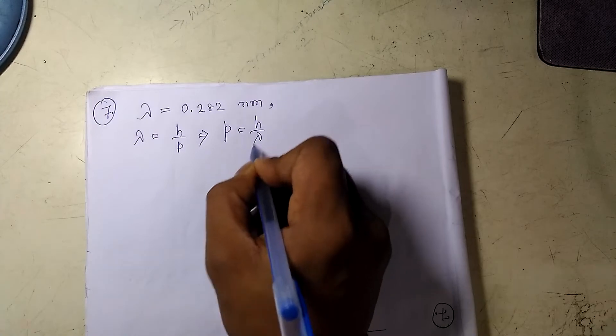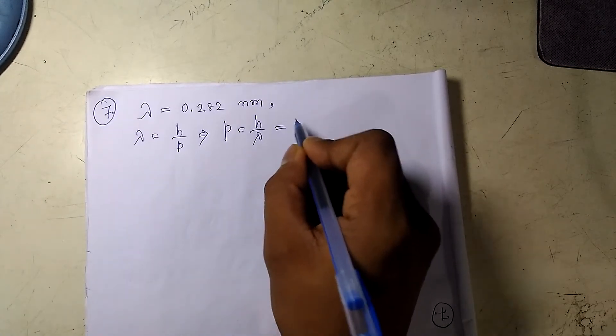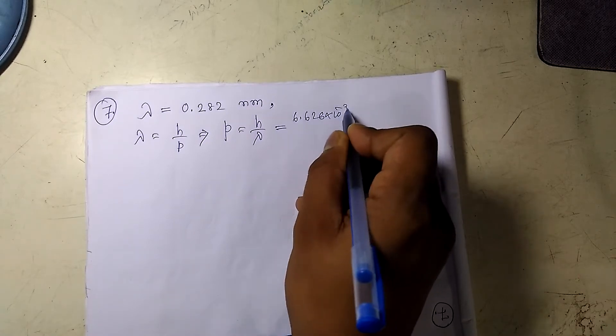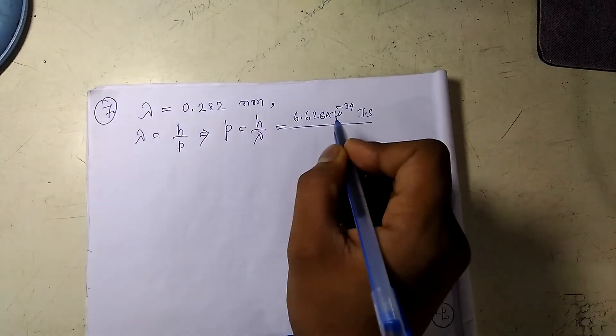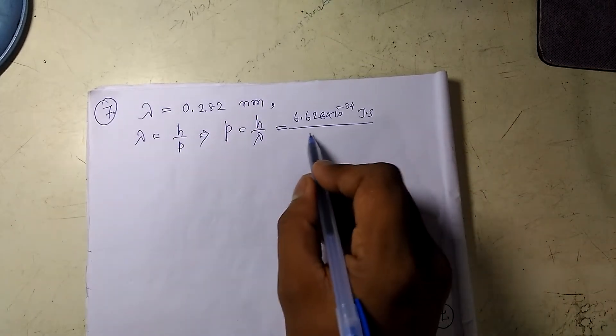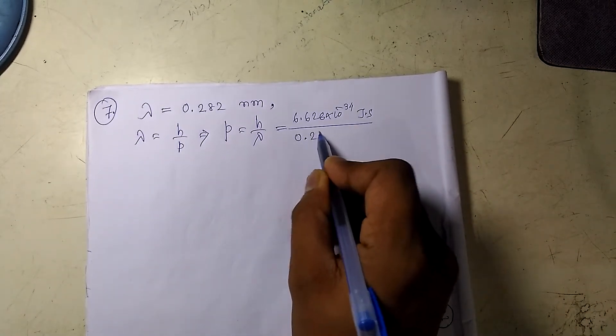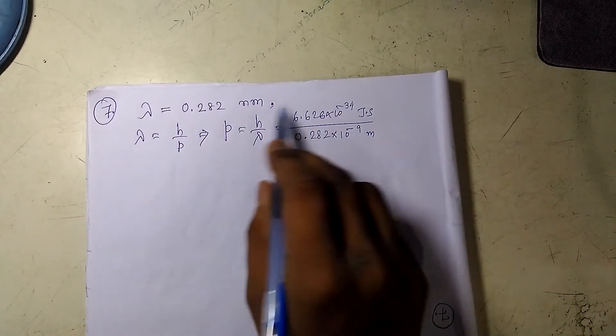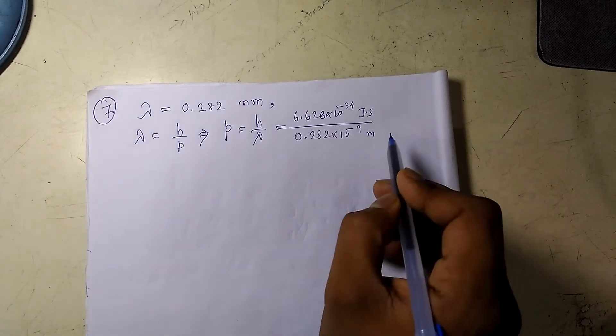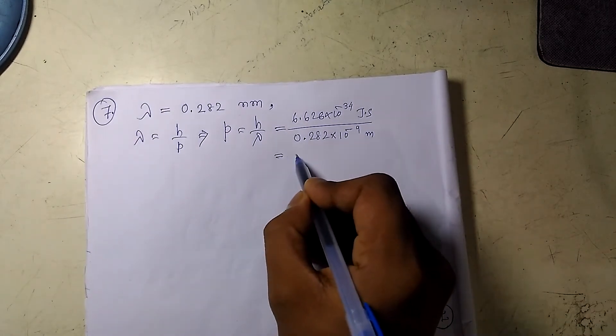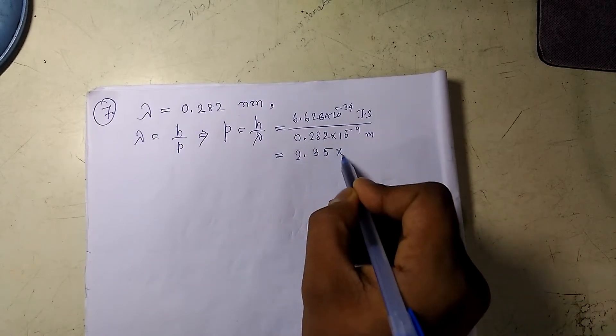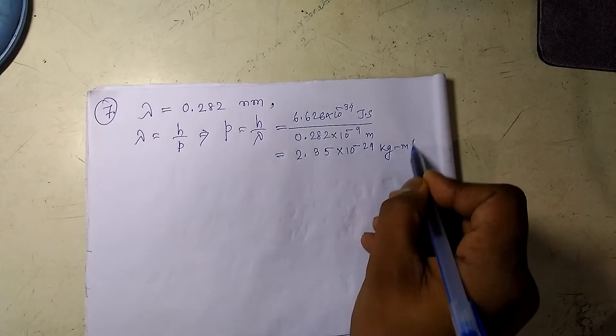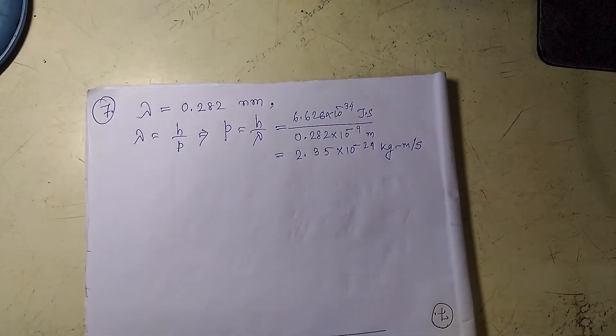So P would be just H by lambda. So if I put the value of H and lambda like 6.626 times 10 to the power minus 34 joule second, I am converting it in SI unit. And lambda in meter, so 0.282 times 10 to the power minus 9 meter. And if I put this I will get the value like 2.35 times 10 to the power minus 24 kg meter per second.